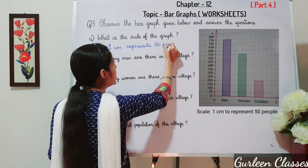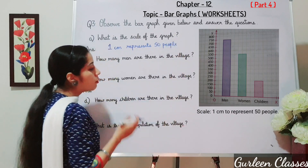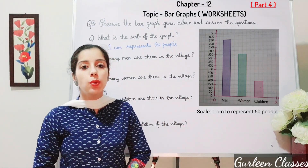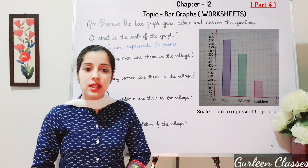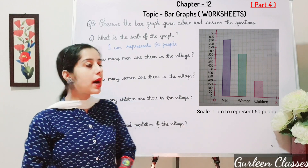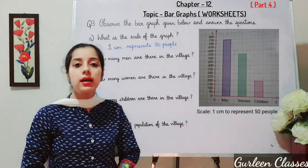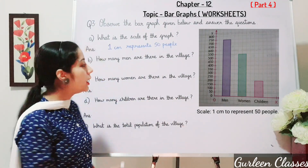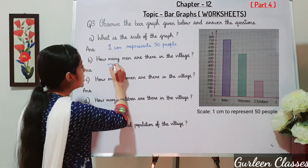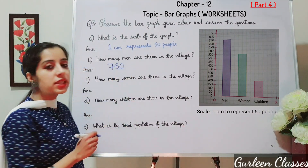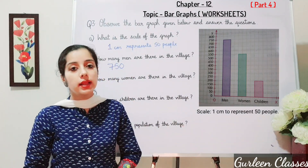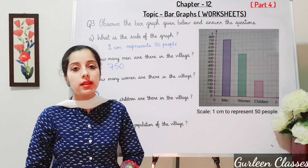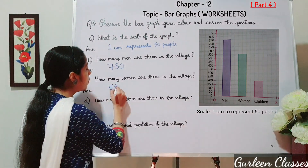As you can see in the bar graph, the vertical spacing is 50, 100, 150, 200 and so on — spacing is 50 each. Part B: how many men are there in the village? There are 750 men in the village. Part C: how many women are there in the village? There are 550 women in the village.